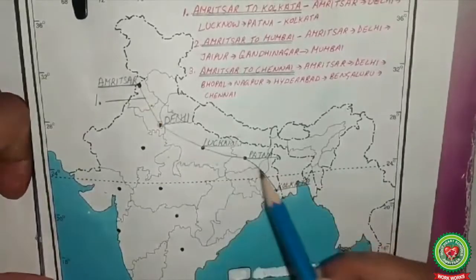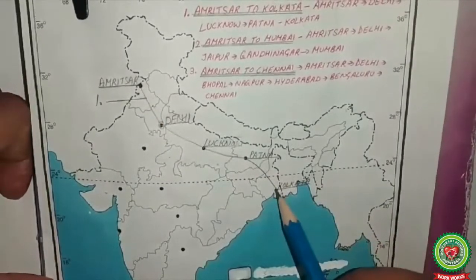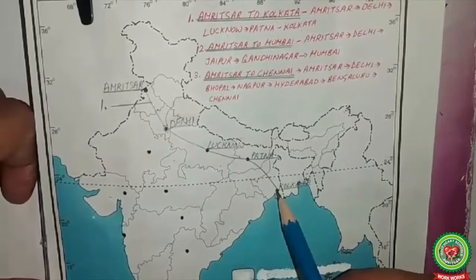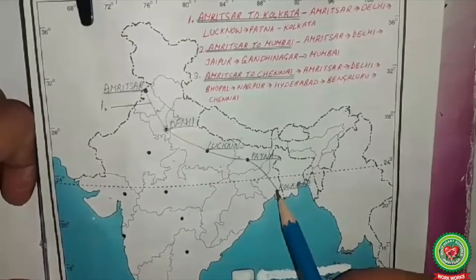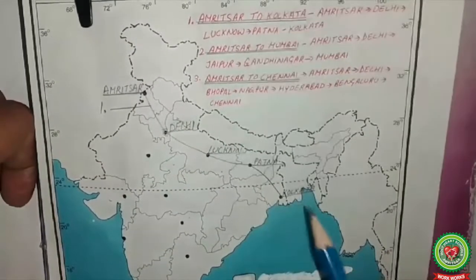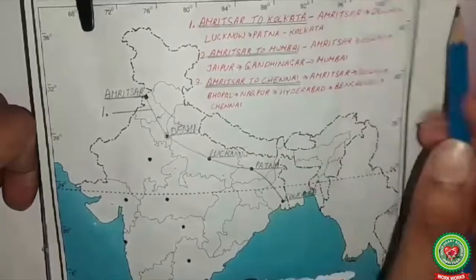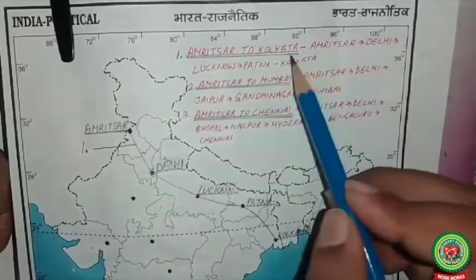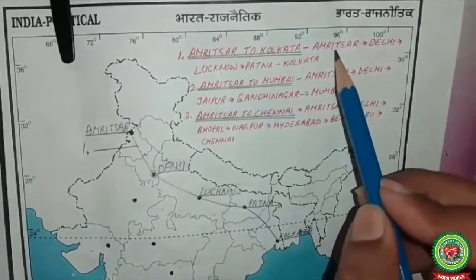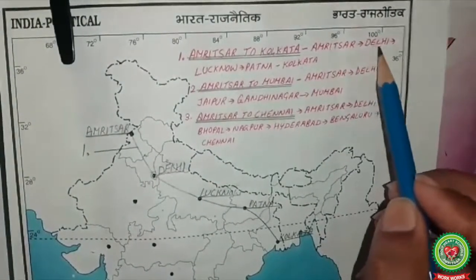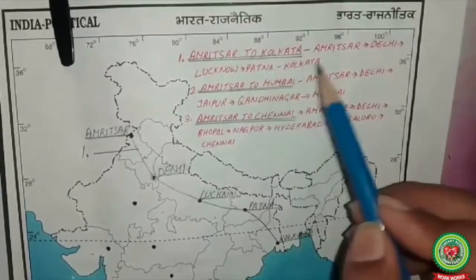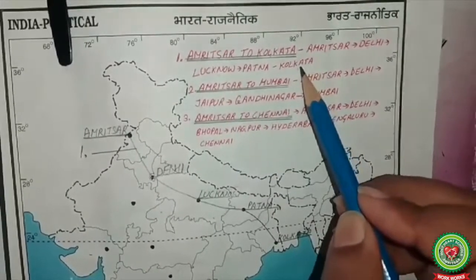Mark this whole route as number one. This is the GT Road — the road that was built by Sher Shah Suri, which we discussed in the previous topic. Write it as: Amritsar to Kolkata — via Amritsar, Delhi, Lucknow, Patna, and finally Kolkata.